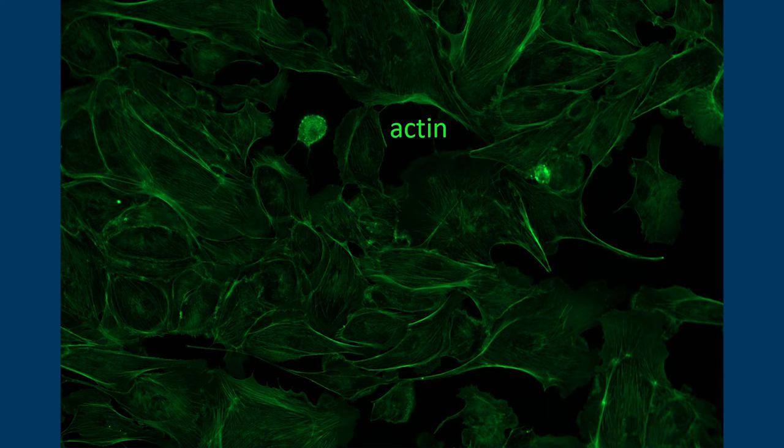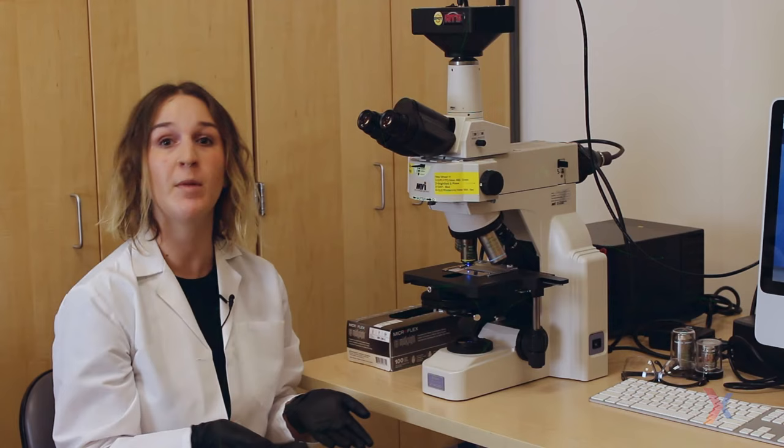And now if we look at the image of our cells that we get from this fluorescent microscope we see that things look different. We only see our actin structures and we see a green image.